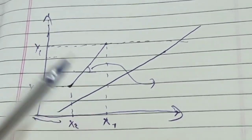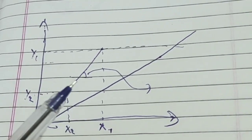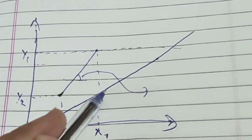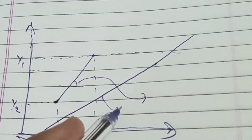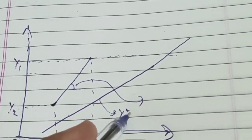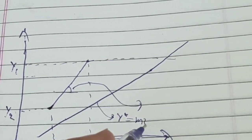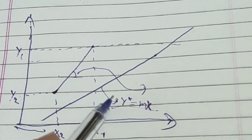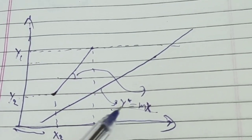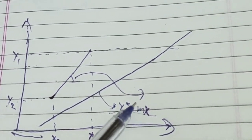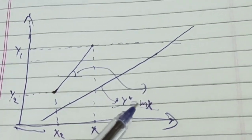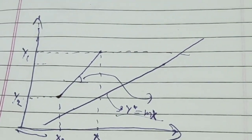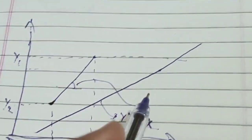This is our operating line and this is our equilibrium line. We have assumed that the equilibrium curve is linear and has the equation: capital Y* equal to M times capital X. Here Y and X are the mole ratios and M is the slope of our equilibrium curve.